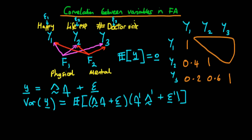In this video we're going to continue our explanation of how factor analysis models can come up with estimates of the variance between observed variables in terms of the underlying unobserved factors, as well as the error terms epsilon. To recap the model we had before: we had three observed characteristics — how happy an individual was, their life expectancy, and the number of doctor visits undertaken in a year. We're trying to explain the variance and covariance of these variables using only two unobserved (latent) factors.